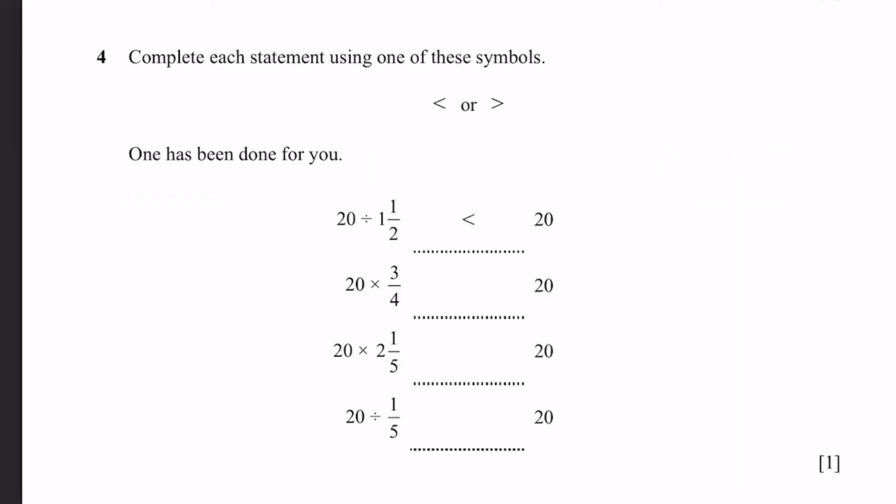Question 4. Complete each statement using one of these symbols. One has been done for you. 20 divided by 1 and a half is less than 20. 20 times 3 by 4. 3 by 4 is less than 1. So 20 times a number that's less than 1 is obviously going to be less than 20, right? Even without calculating it. And if you calculated it, that's just 15. 15 is less than 20. So of course, that's the symbol.